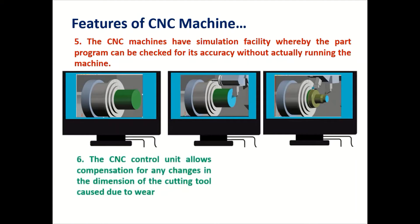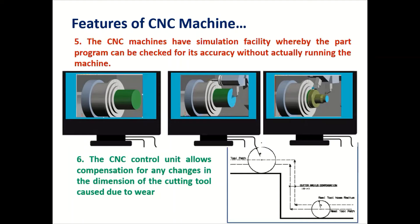The sixth feature is that the CNC control unit allows compensation for any change in the dimension of the cutting tool caused by wear. Due to continuous use, the cutter may wear out. If you replace it, it will actively get compensated. For that you can use G codes: G40 for cutter diameter compensation cancel, G41 for cutter diameter compensation left, and G42 for cutter compensation right. With that command, the cutter will automatically adjust and we will get a perfect component as per the drawing. These are the six major features of the CNC machine.